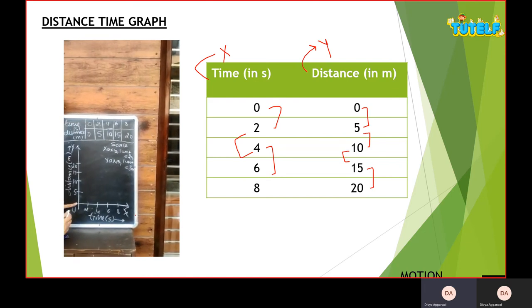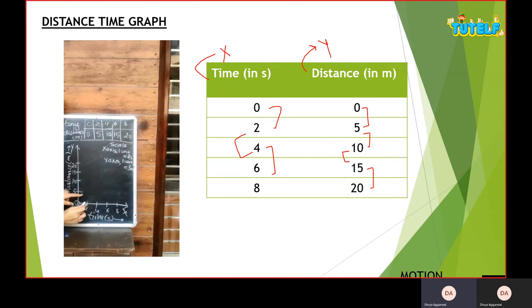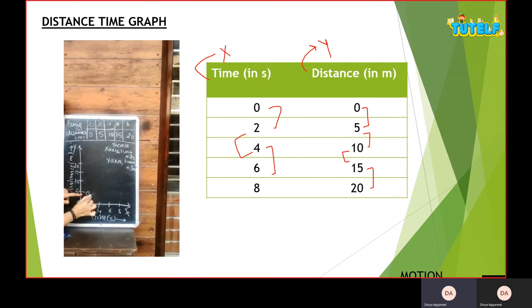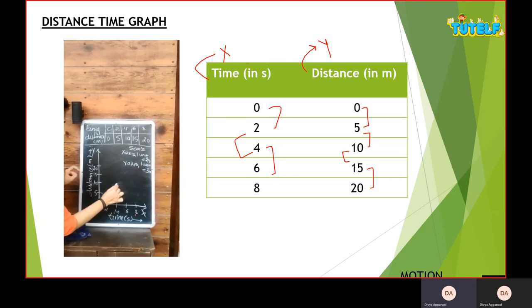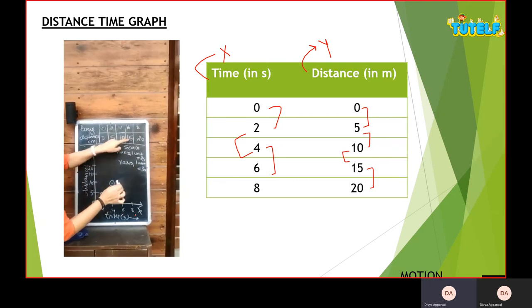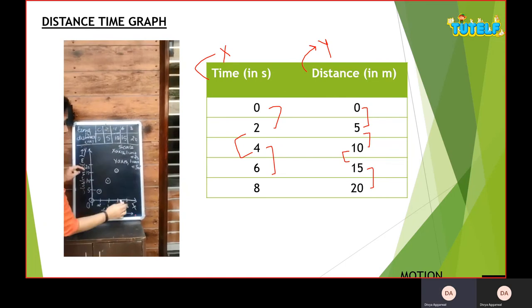Now we will plot this: 0 to 0, x2 y5, x4 y10, x6 y15, x8 y20.